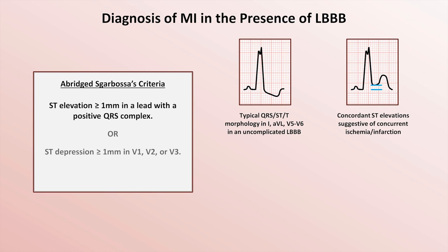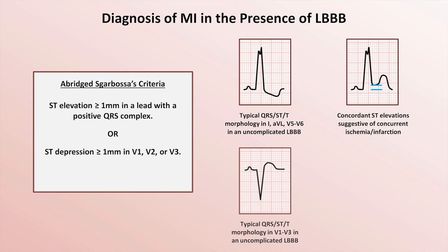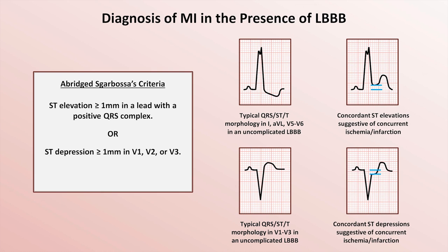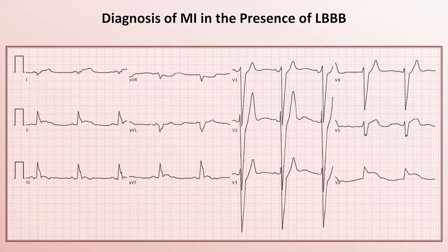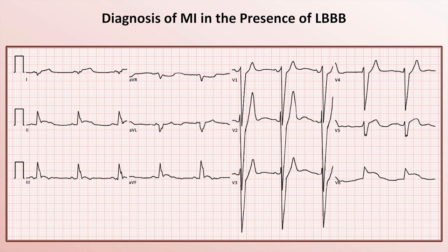The second SCARBOSA criteria is ST depressions equal to or greater than 1 mm in V1, V2, or V3. Here is a typical appearance of the QRS, ST, and T in those leads from just a left bundle, and here is the morphology suggesting an acute MI. Here is an example of a patient with a preexisting left bundle who is now experiencing an acute MI. You can notice the concordant ST elevations most prominently in leads 2 and V6, and the concordant ST depressions in V1 through V3.